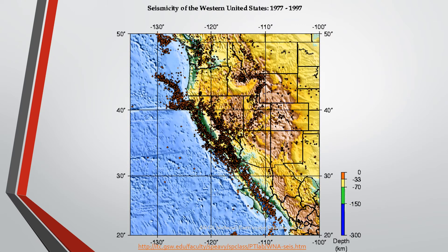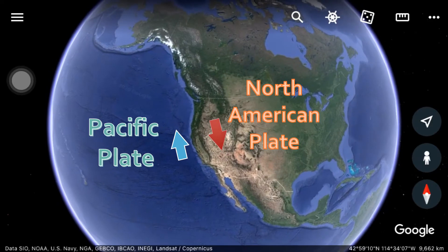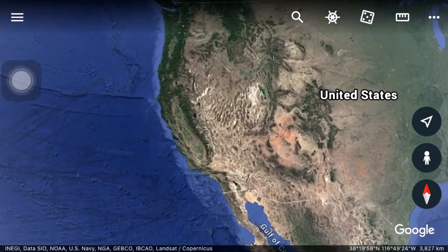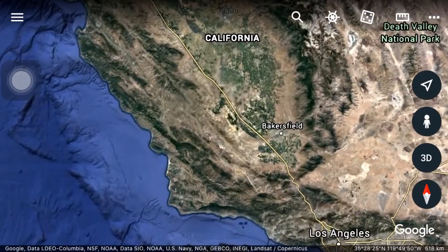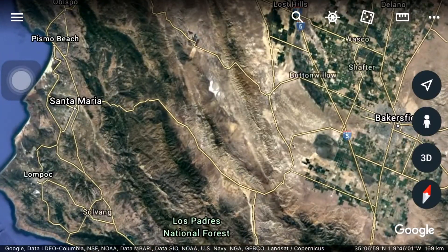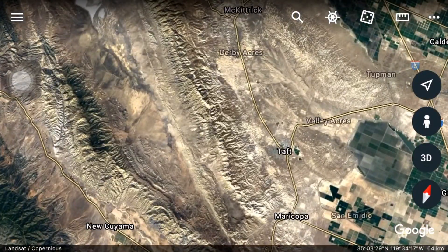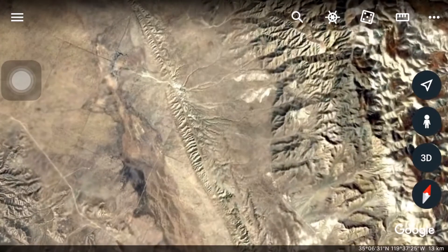This figure illustrates the seismicity in western United States from 1977 to 1997. Earthquakes only occur where there is breakage on the crust called a fault. The record of epicenters here provides evidence of the presence of faults along this area. These faults mark the boundary between the Pacific Plate and the North American Plate, giving us the most common example of a transform fault boundary, which lies across California, USA.